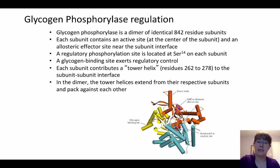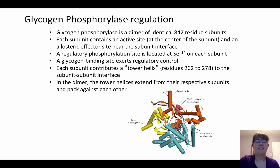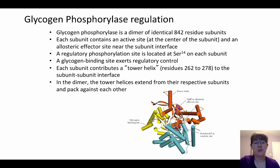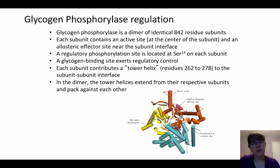The tower helix is important because it's easier to find than the small gap where the allosteric effector site is. In addition to allosteric regulation, glycogen phosphorylase is also covalently regulated by phosphorylation — specifically at serine-14 on each subunit. Since those two subunits are identical, there's one serine-14 on each that can be phosphorylated. The glycogen binding site also helps exert regulatory control.